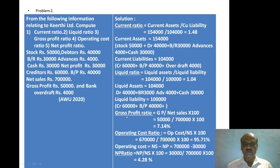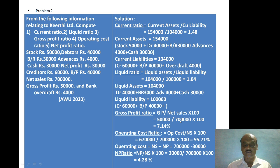Gross profit ratio = gross profit divided by net sales into 100. Gross profit is Rs. 50,000, net sales is Rs. 7,00,000. So Rs. 50,000 divided by Rs. 7,00,000 into 100 = 7.14% is the gross profit ratio.